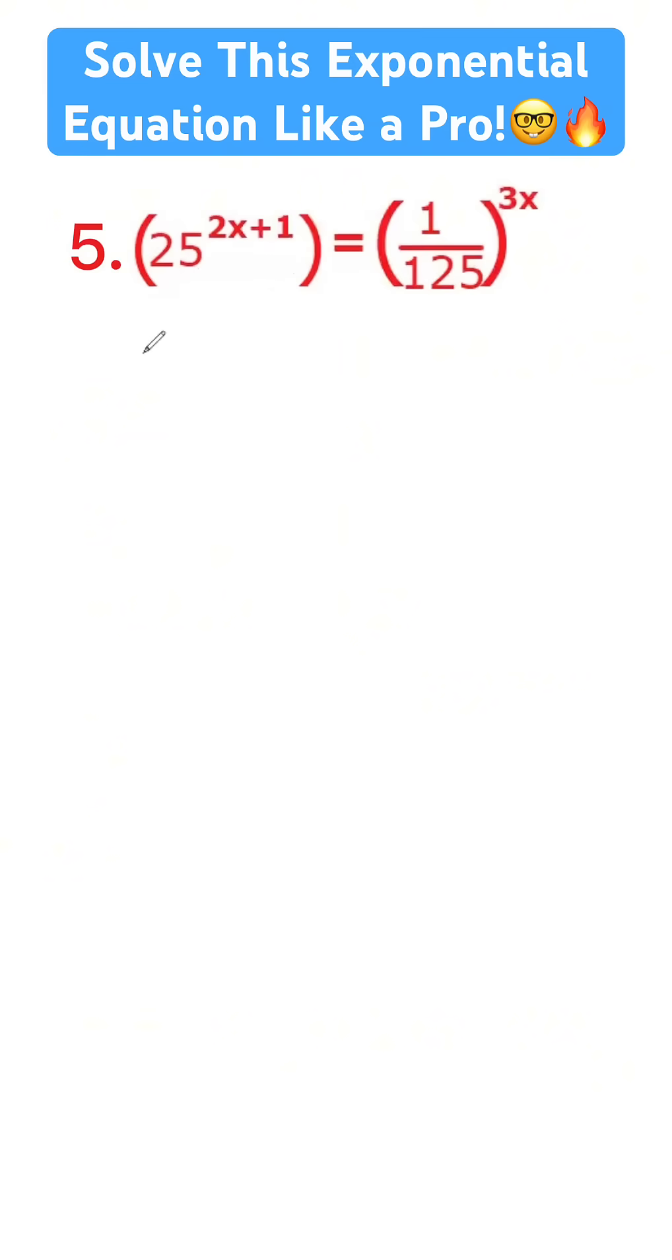So what we have: we have 5 times 25, which is 5 squared, and you still have the 2x plus 1 right there.